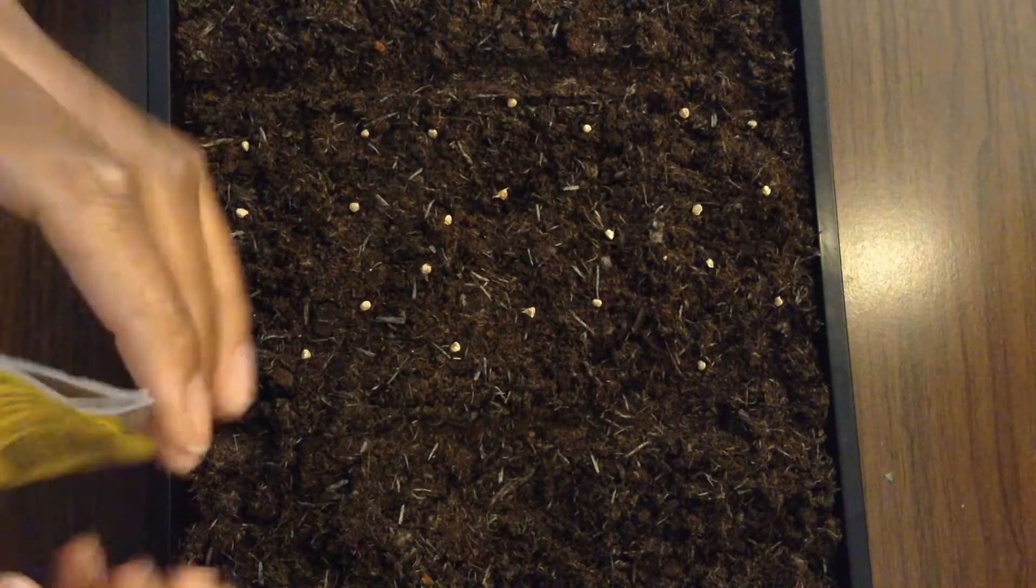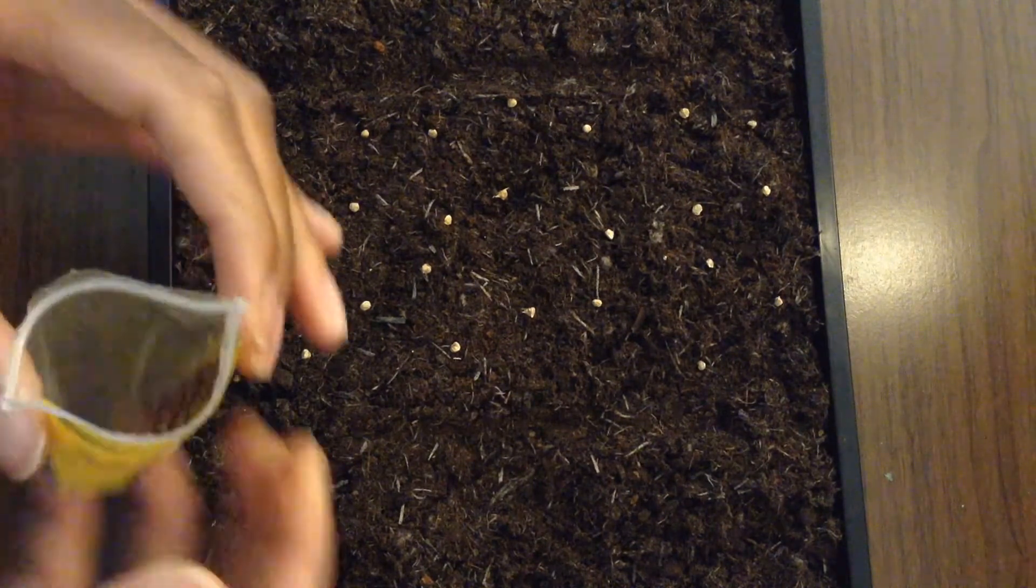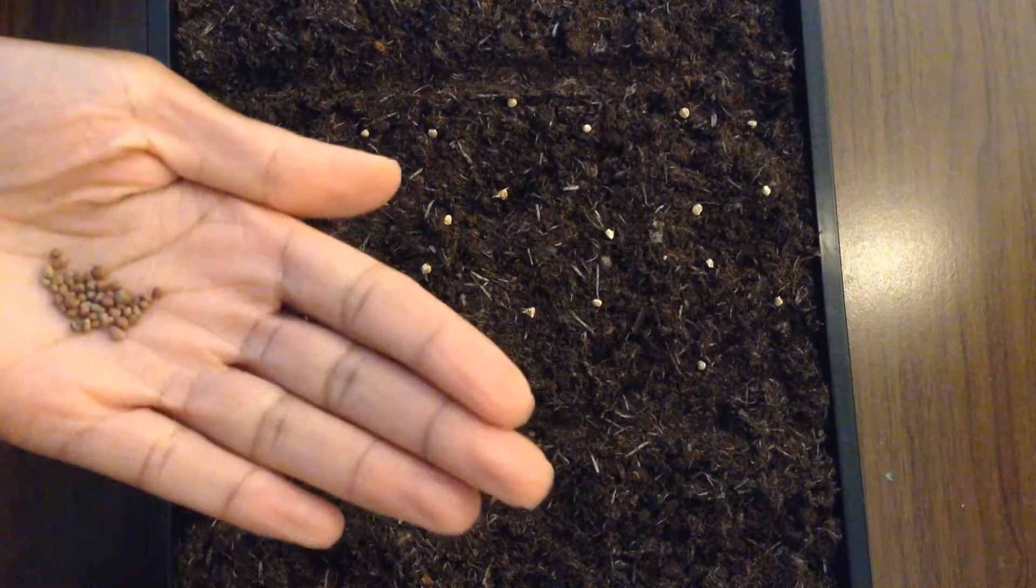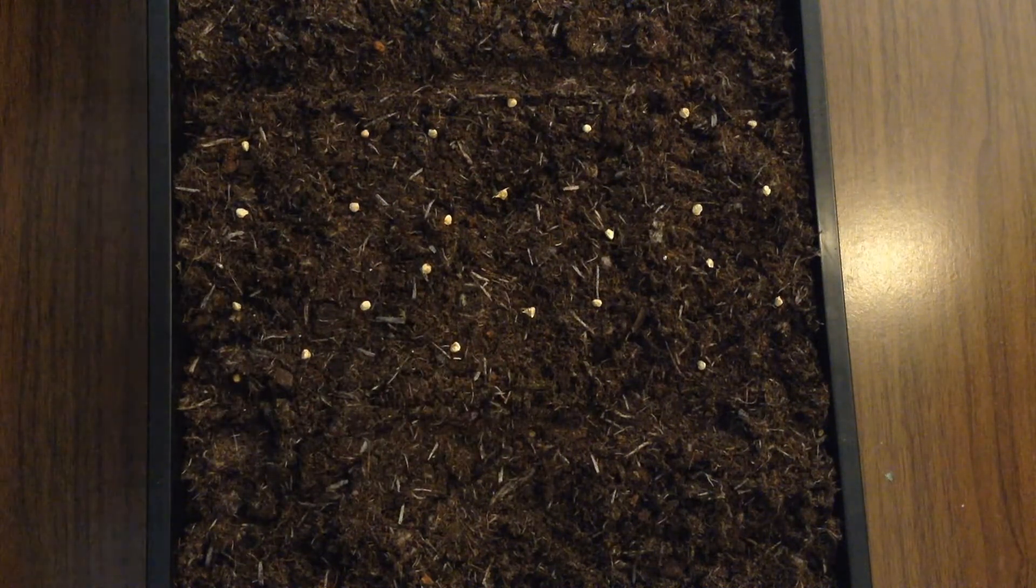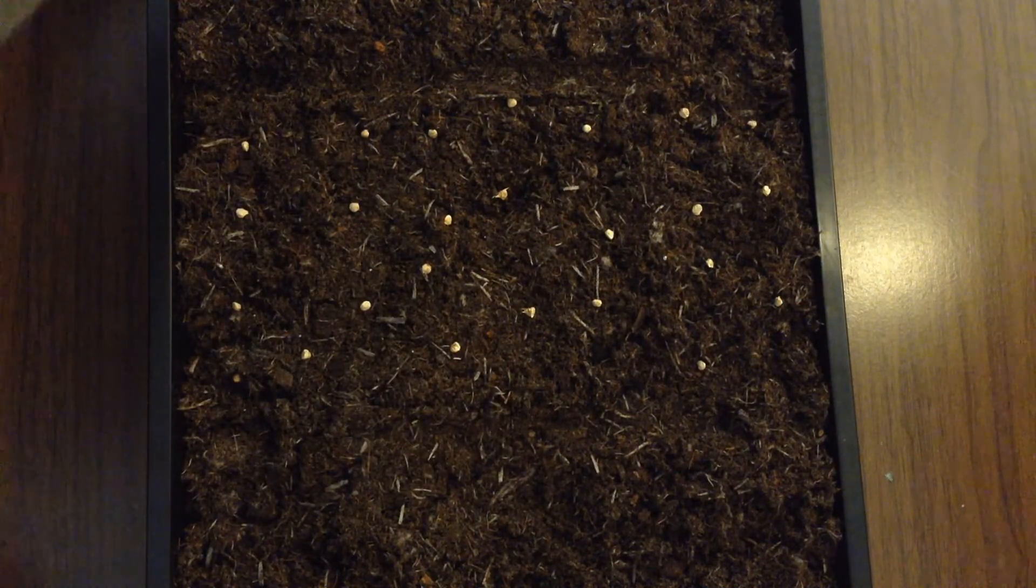And the radishes. So this is a variety called Black Spanish Round.